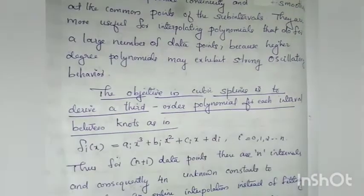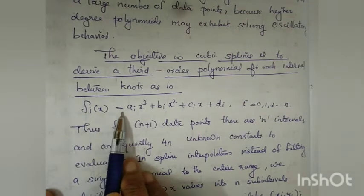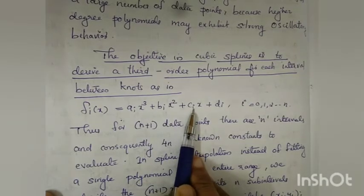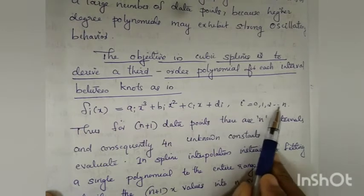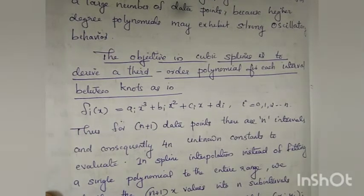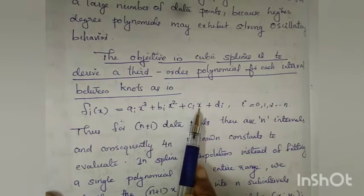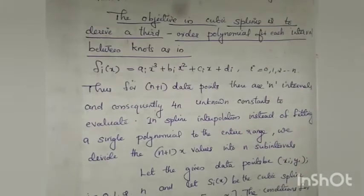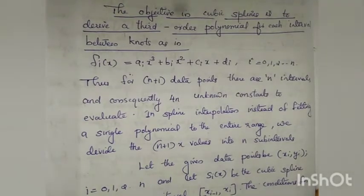The objective of cubic spline is: we define di, where i is equal to 0, 1, 2, etc., up to n. The third-order polynomial has terms x³, x², x, then di. We have n plus 1 data points and n intervals present.